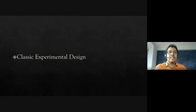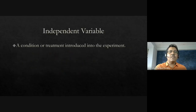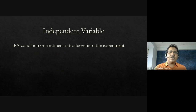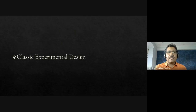In a classical experimental design, we first need to understand the independent variable — the condition or treatment introduced into the experiment. In today's context it could be a vaccine, or in social science research it could be exposing a person to some kind of content and then observing the impact of that condition on the dependent variable.